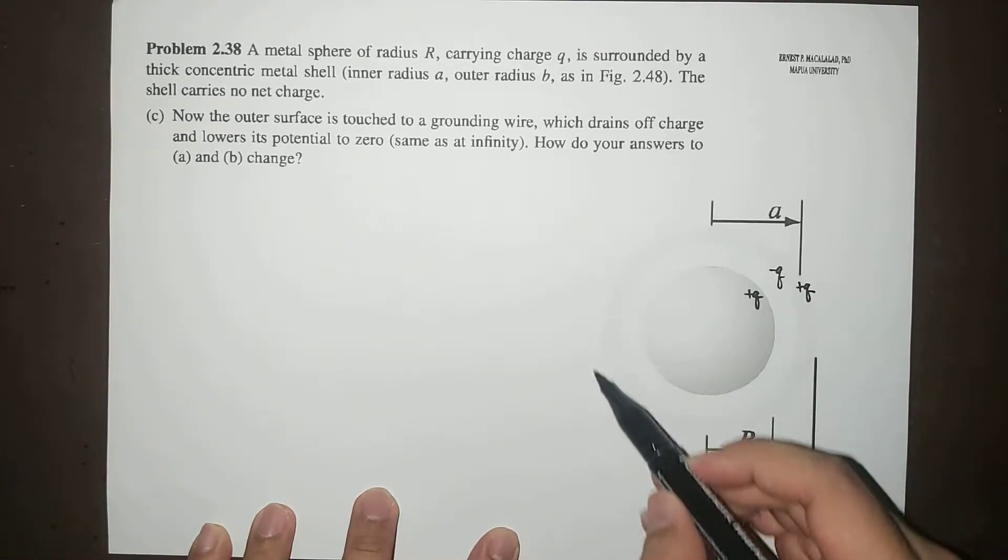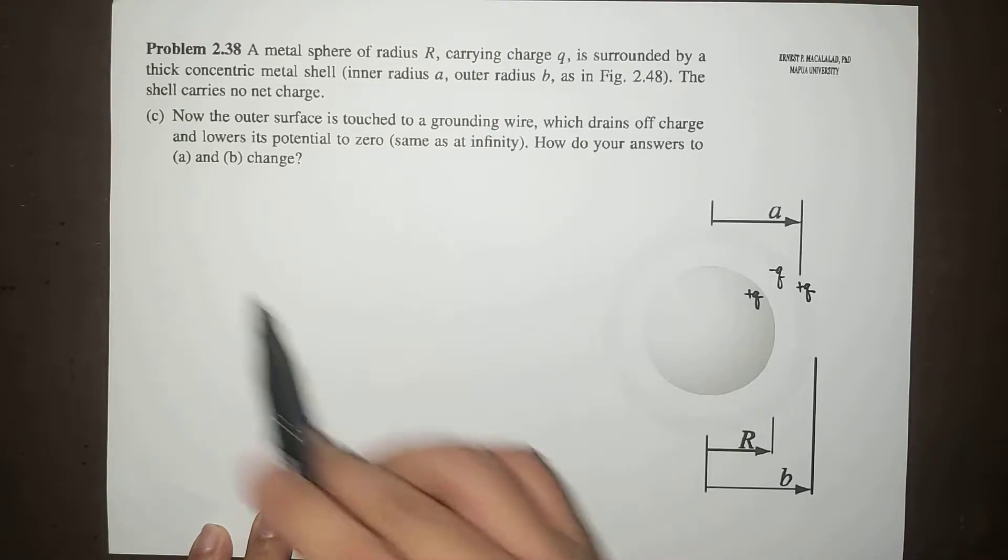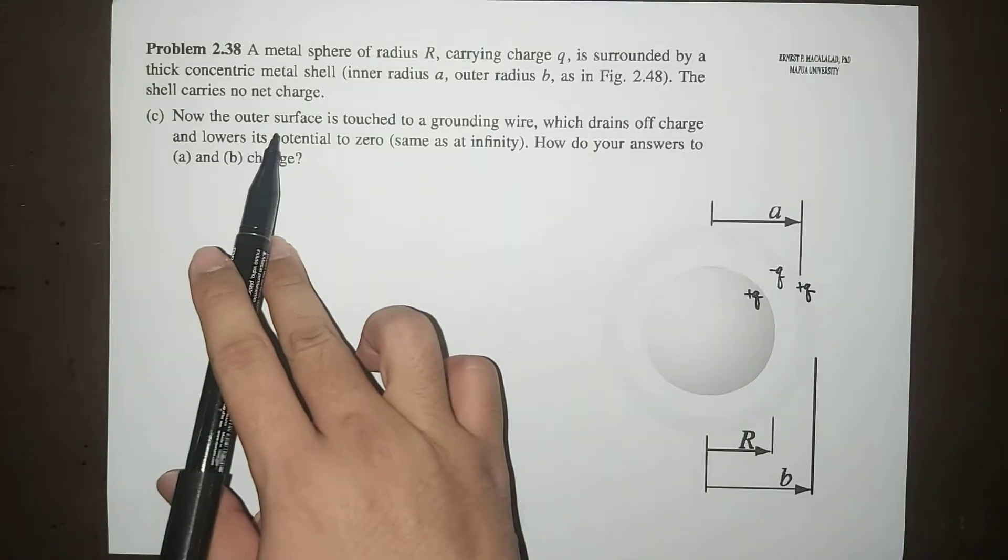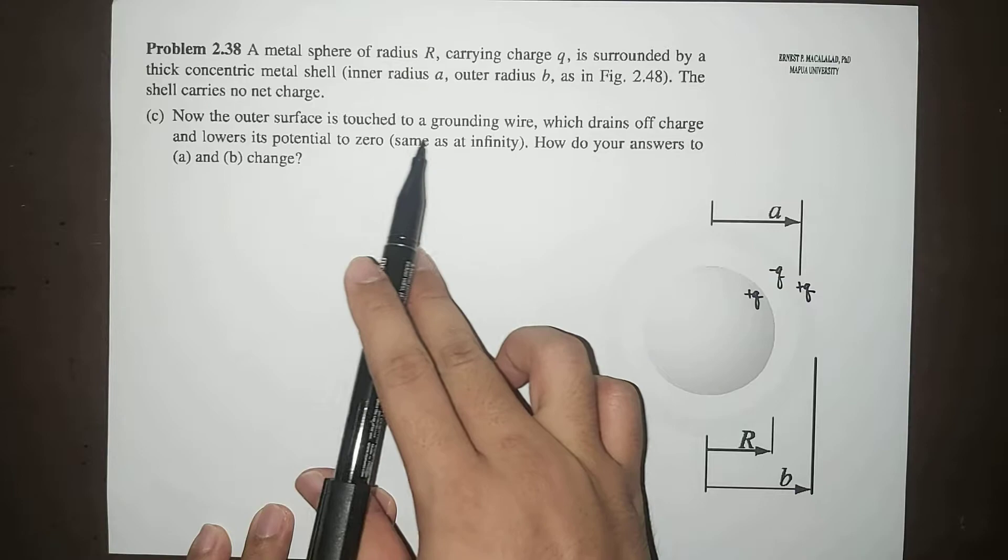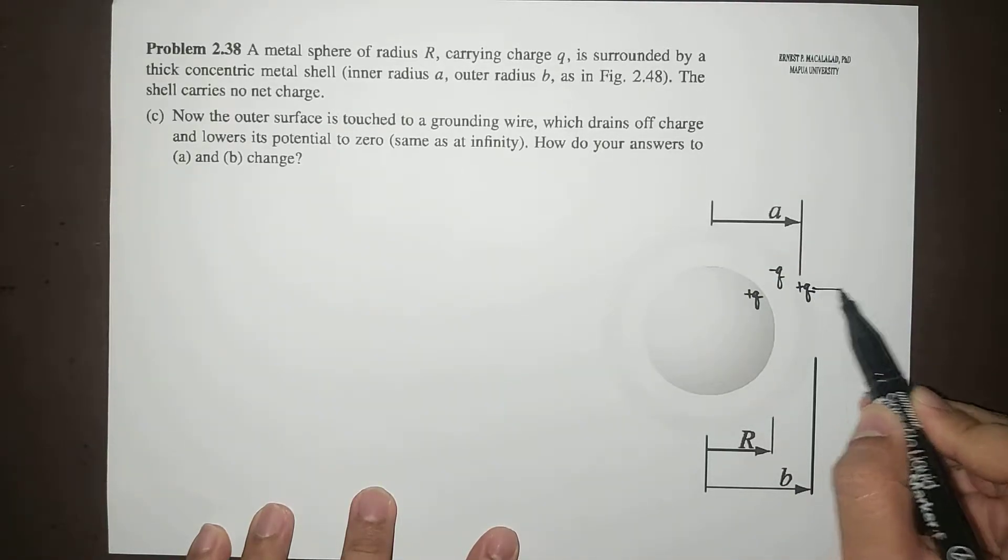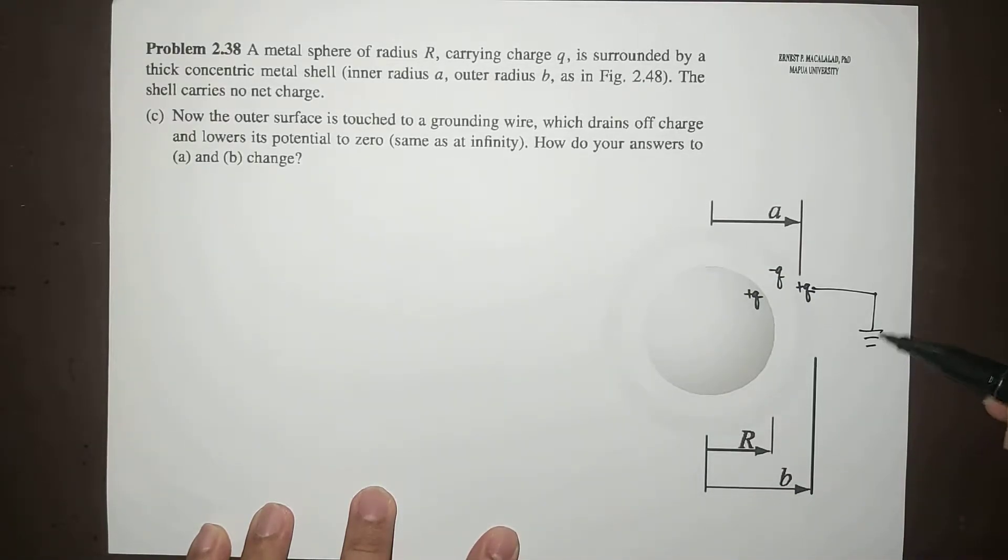It's mentioned in letter C that the outer surface is now touched by a grounding wire, so that means this accumulation of charges will now be drained off the